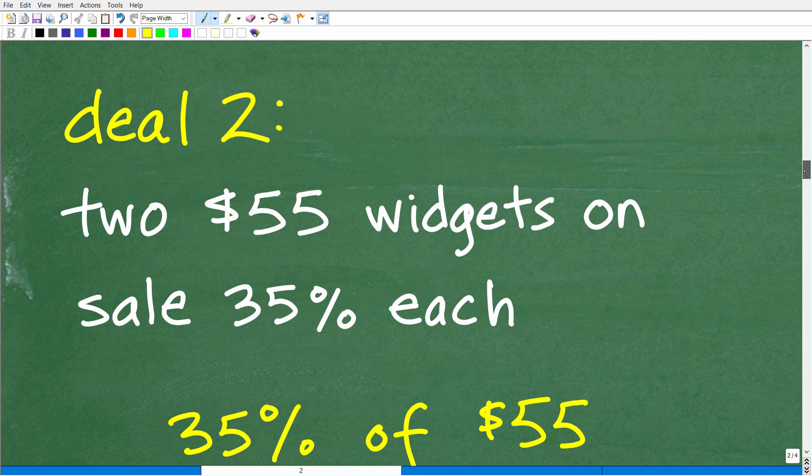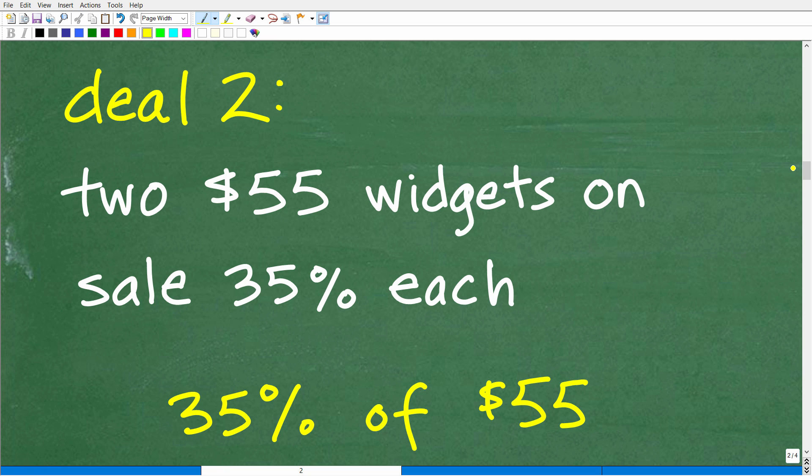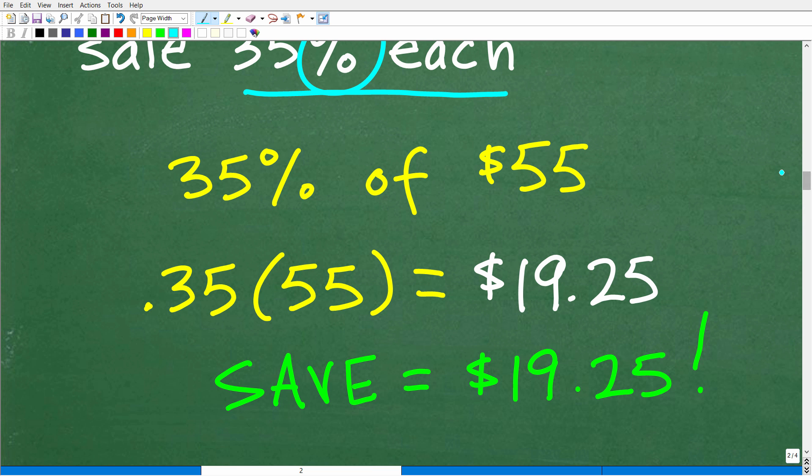Okay, so here is deal two. We have two $55 widgets on sale for 35% each. Well, this is where people could get confused because we're dealing with percent. So what does this mean? Well, 35% off, on sale for 35% off. So let's not confuse this. Most of you might be saying, okay, we have to figure out 35% sale. What does that mean? Well, we have to take 35% of the cost of a widget. So 35% of 55, this is one widget.